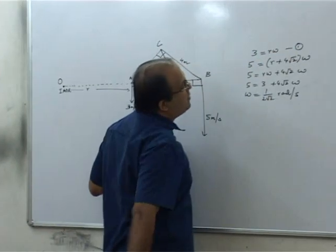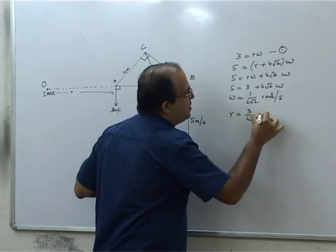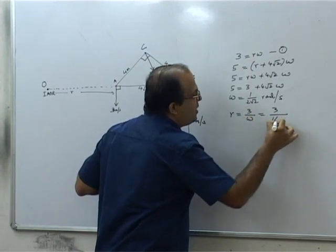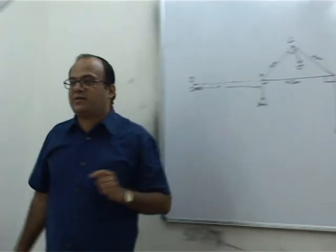So R we can find straight away from equation 1. R will be equal to 3 by ω, that is 3 divided by 1/(2√2), that is 6√2 meters. So now R is known.